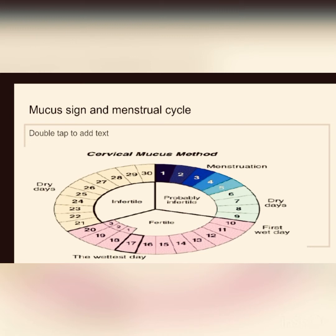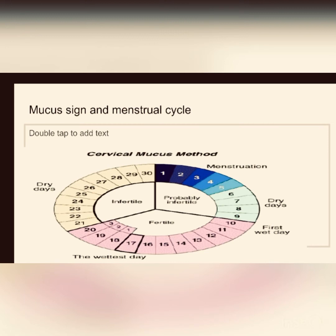For the mucus sign, you have to check it yourself. You can start any time in your cycle, but it's better to wait until your next cycle begins — the first day of your menses. Start charting: write down the date when your menses begins. For example, 13th July — menses; 14th July — menses; 15th July — menses. Some women see their period for two days, three, four, five, or even up to a week — it depends on each woman.